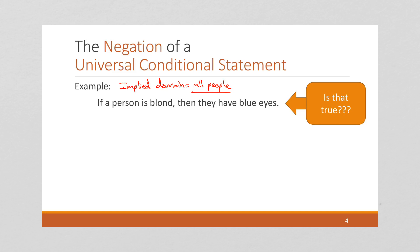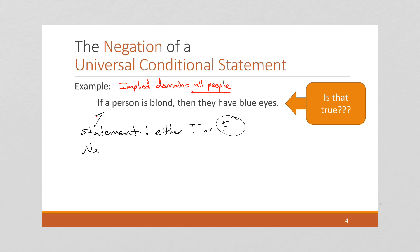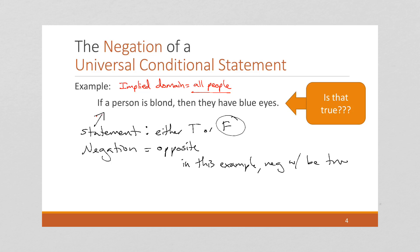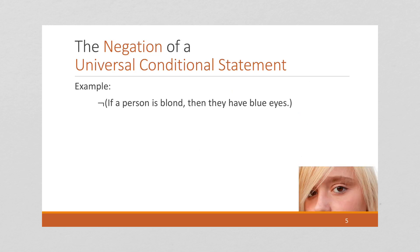No, it's not true. Blonde hair and blue eyes are often found together, but not always — certainly not required. Since this is a statement, it's either true or false. We said it was false, which means the negation is the opposite — so in this example the negation will be true.